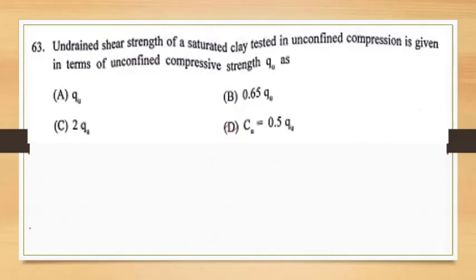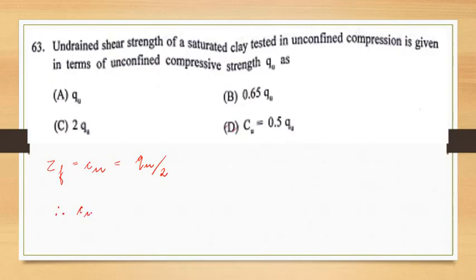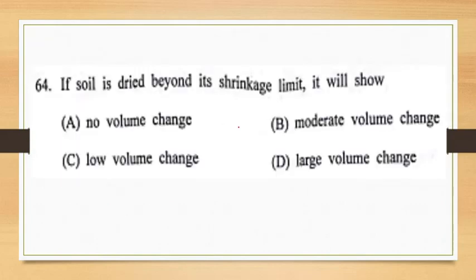So let's get started. The first question is: undrained shear strength of a saturated clay tested in unconfined compression is given in terms of unconfined compressive strength q_u as — and four options are given. We know that the undrained shear strength of a saturated clay is expressed as τ_f = c_u = q_u / 2. Therefore the answer is option D, that is c_u = 0.5 q_u.